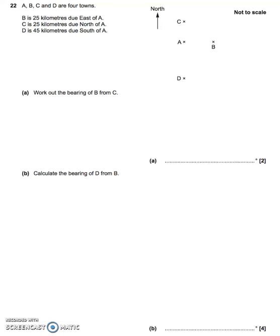Okay, question number 22. We're given a whole bunch of information. We've got A, B, C and D are four towns. We know that B is 25km due east of A, C is 25km due north of A, and D is 45km due south of A. North is directly up, and this diagram is not to scale, which is important because in part A we're asked to work out the bearing of B from C. Now, if it was to scale, we could measure the bearing with a protractor, but it's not.